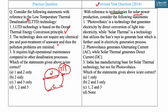Statement three says LTTD requires high operational maintenance compared to other desalination processes — this is incorrect. Since no effluent treatment is required, it gives less operational maintenance compared to other desalination processes and is also environment-friendly. So the correct statements are one and two only — answer A. The PYQ answer is also A, that is one only.